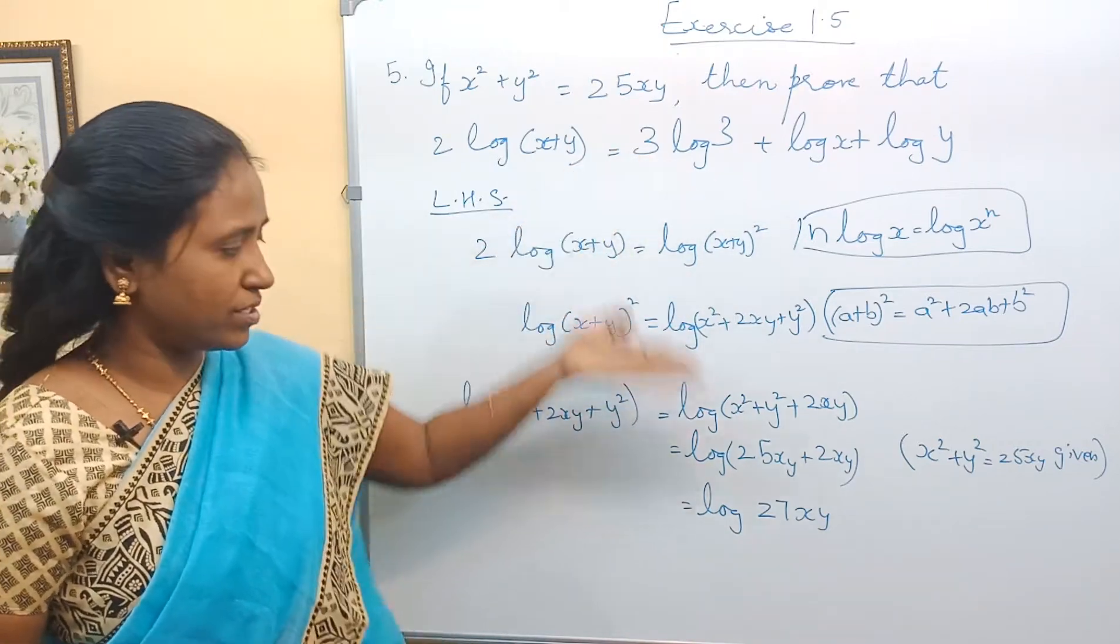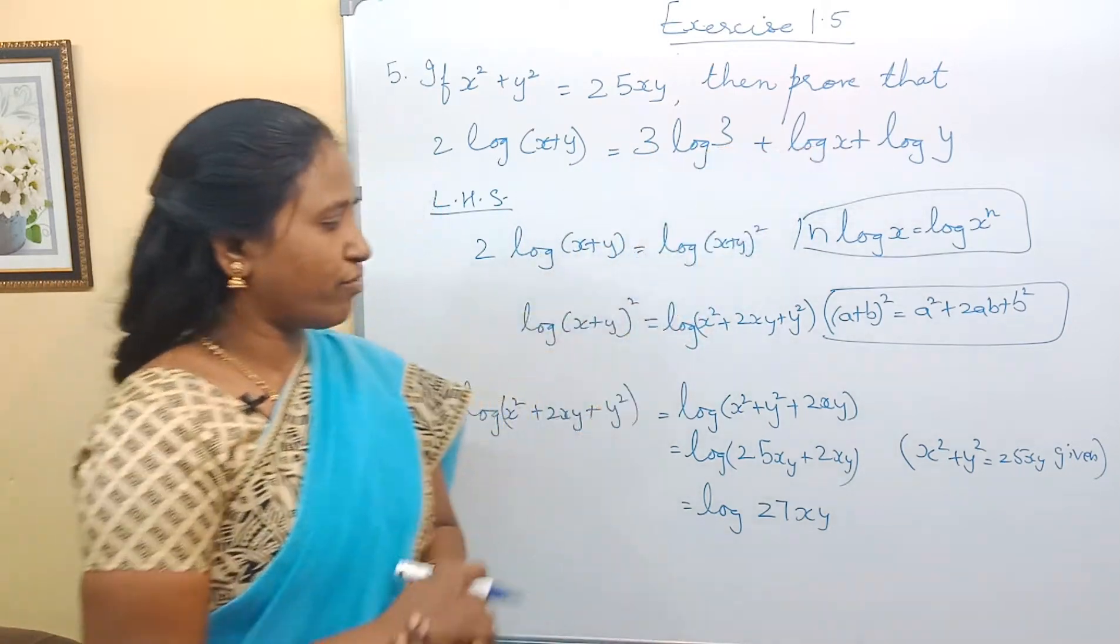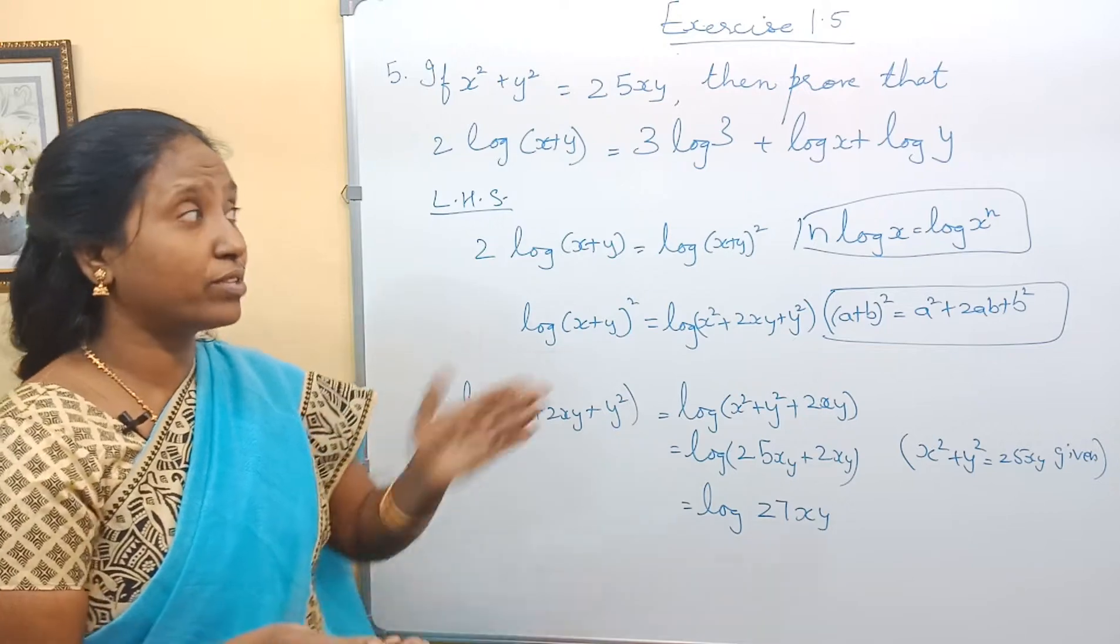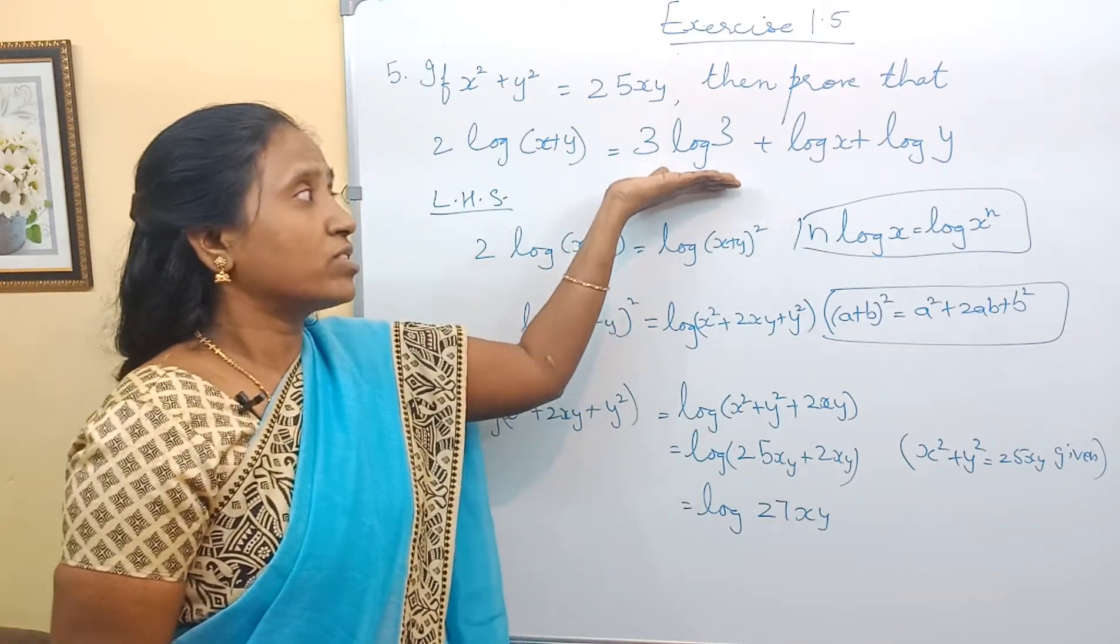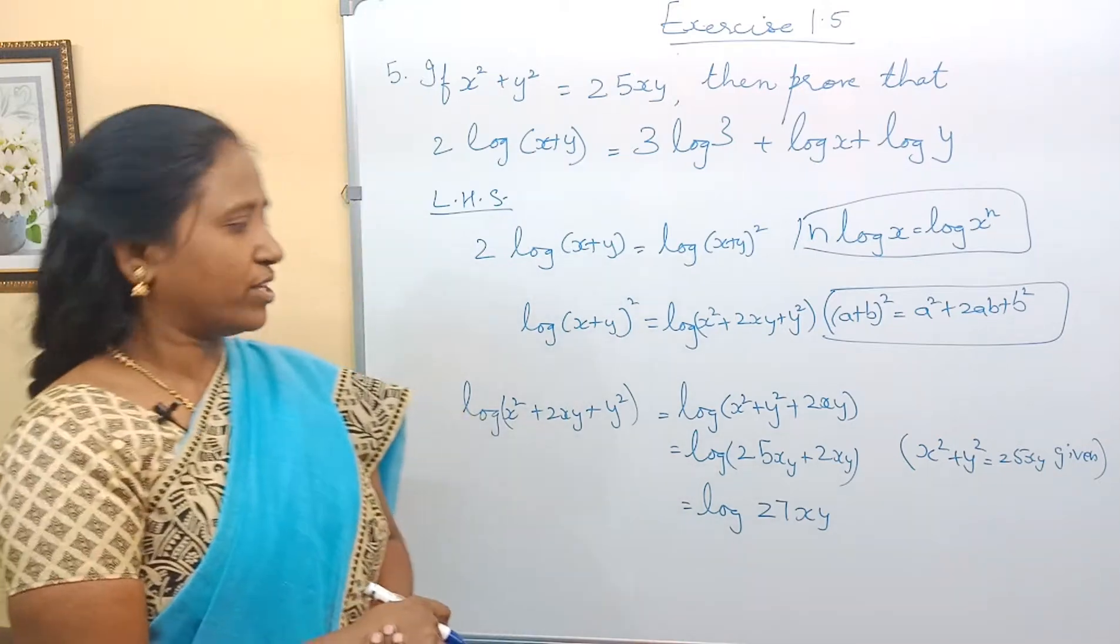We have to prove this is equivalent to this. So here we see that it is in the addition format. So how do we go about with the addition format? We have to think. We should see what we have to prove. According to that, we have to make the calculations. Right?